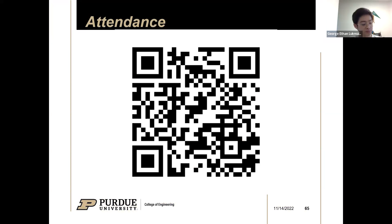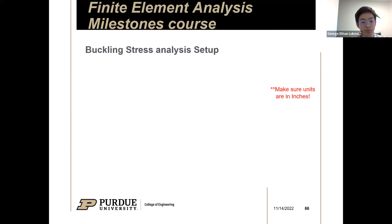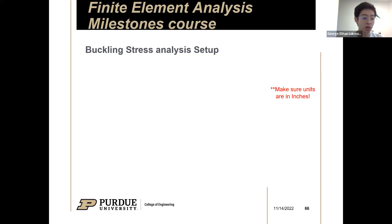Before we get started, I want to explain why I added buckling stress analysis into our modules. During spring and fall, the modules would have ended with what we talked about in week two, which was shape optimization. That would have been the last topic, and then week five would have been your final projects. I'd like you guys to be more immersed into Fusion's FEA options.